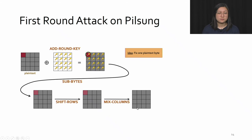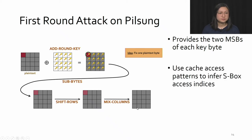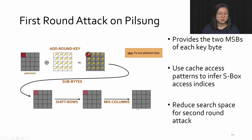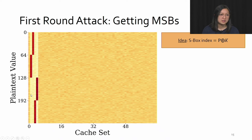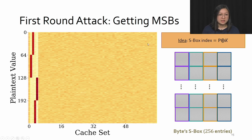The first round attack on PoSung is exactly like we would do for AES. For PoSung, we get the two most significant bits of each key byte, using cache access patterns to infer S-box access indices, and we use this to reduce the search space for the second round attack. Here we have a heat map representing cache accesses when a byte is fixed — on the x-axis is the cache set, on the y-axis is the plaintext value the byte has been fixed to, and darker regions indicate that cache set has been accessed. The S-box is mapped contiguously across cache sets, with the first 64 entries going to the leftmost cache set, the next 64 to the second, and so on.